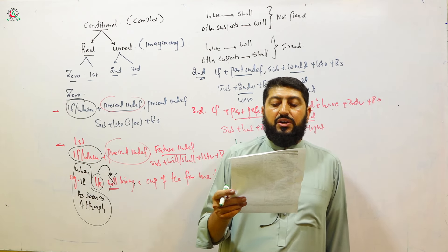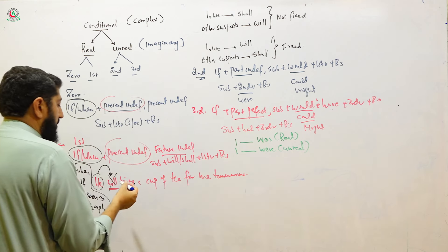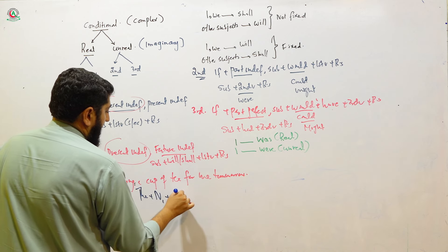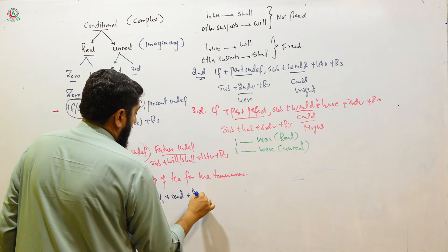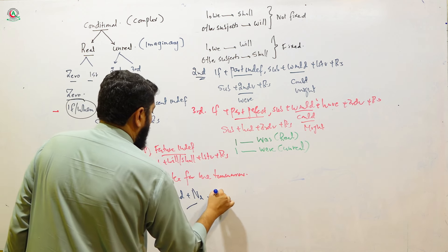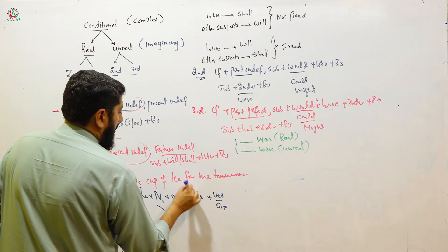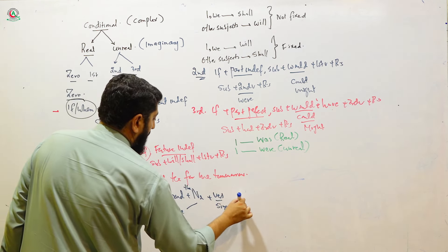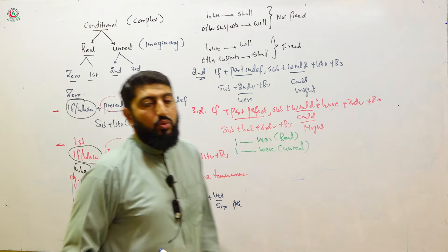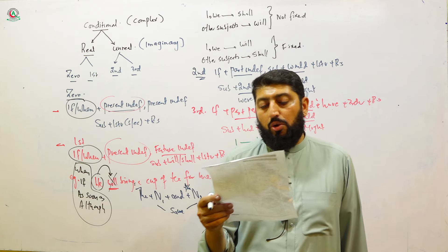'The collector and magistrate has/have done the work.' The trick is: whenever you have 'the + noun one + and + noun two,' it means both refer to the same person — so the verb must be singular. If there were a second article, it would be plural. But since there is no second 'the,' we go for singular verb. Option number two is the correct one.